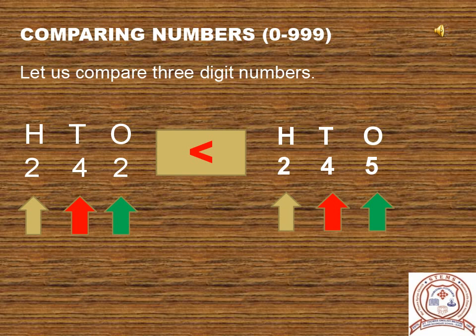What if the digits in both hundreds and tens place are equal? Let us compare 242 and 245. Start by comparing the leftmost digit. Since both hundreds digits are same, we move to tens — they are same too. Now we move to the ones place. In 242, 2 is at ones place, and in 245, 5 is at ones place. 2 ones is smaller than 5 ones. Hence 242 is smaller than 245.